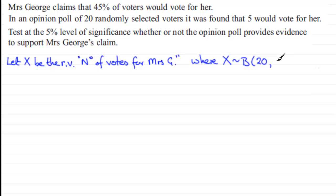If we call the probability p for success, that is someone voting for Mrs. George, then for the null hypothesis we have that p is 45%, or 0.45.